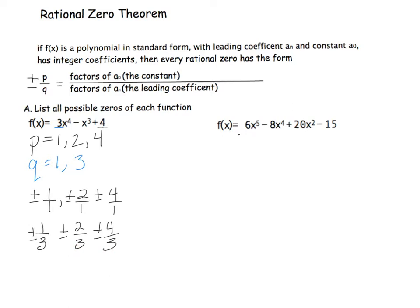Let's look at another example — there are a lot more possibilities here. We'll list our p's, which are all the factors of 15: 1 and 15, and 3 and 5. So the factors for the constant p are 1, 3, 5, and 15. Then the factors of our leading coefficient 6, that's q, are 1, 2, 3, and 6, because 6 is 1 and 6, or 2 and 3.